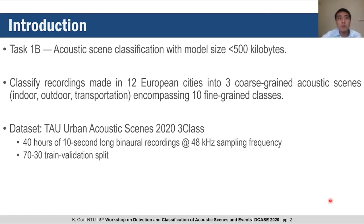The dataset provided for this task is the TAU Urban Acoustic Scenes 2020 3-class dataset, which contains 40 hours of 10-second long binaural recordings captured at a sampling frequency of 48 kHz. It also features a 70-30 train-validation split, which we use to assess our model performance.